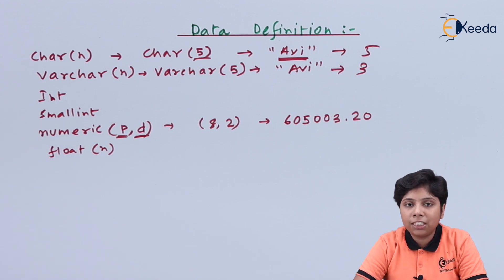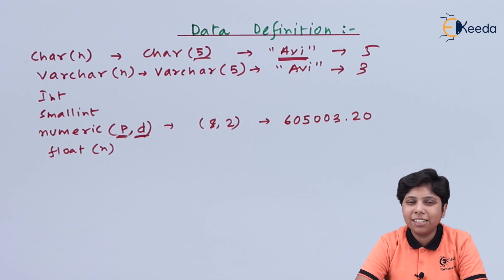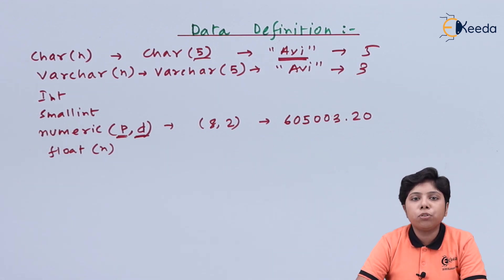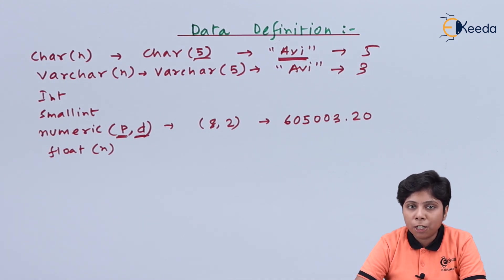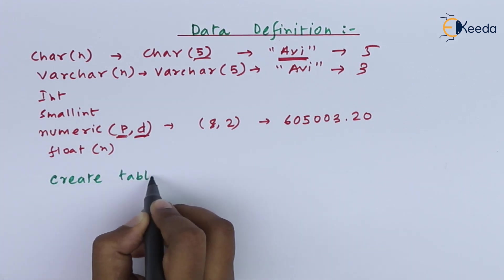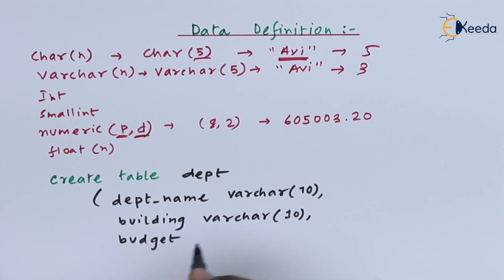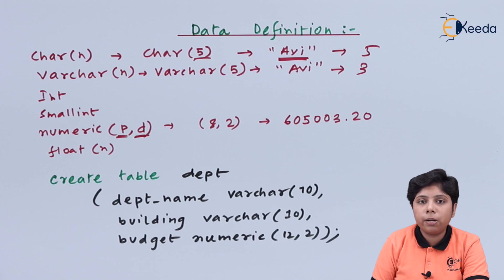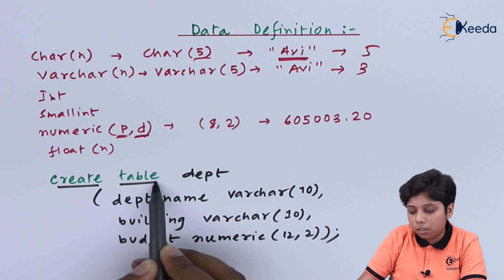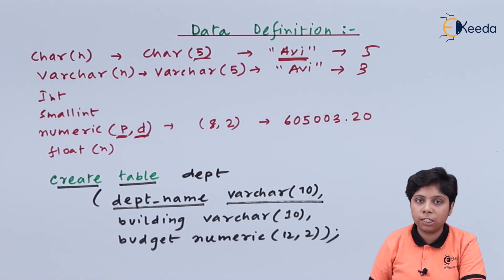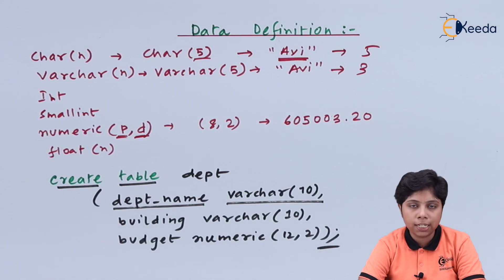Those are all the basic data types that SQL provides. Other than these there are some complex or derived data types, but these are the fundamentals. Now moving to the DDL commands — to create a relation such as a department table, we use the CREATE TABLE command followed by the table name, then all the attributes along with their data types separated by commas, and end with a semicolon to indicate the schema design is complete.